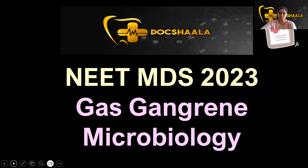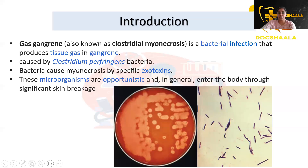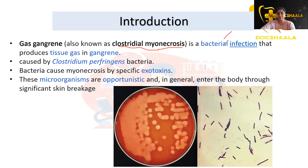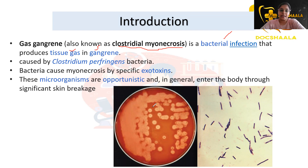Let's see what gas gangrene is and which organism causes it. Gas gangrene is also known as clostridial myonecrosis. It is a bacterial infection that produces tissue gas in gangrene. Gangrene is a necrotized tissue, and when necrotized tissue is filled with gas, it is called gas gangrene.